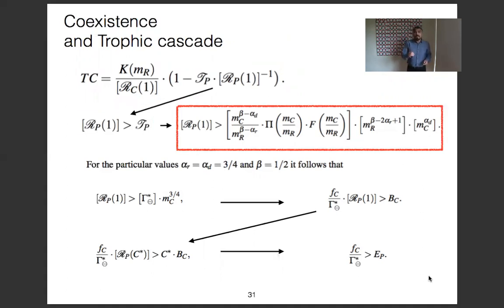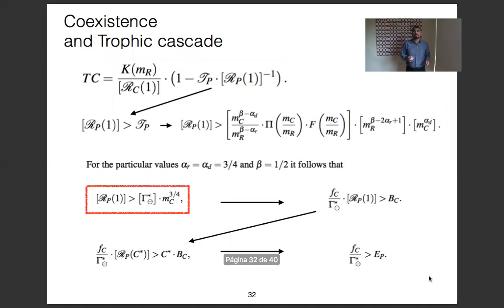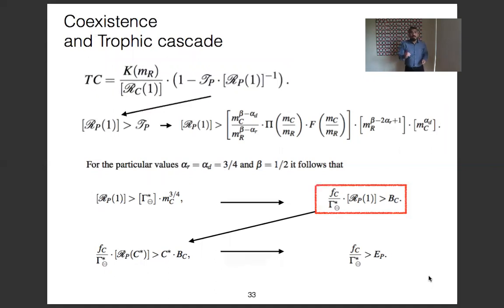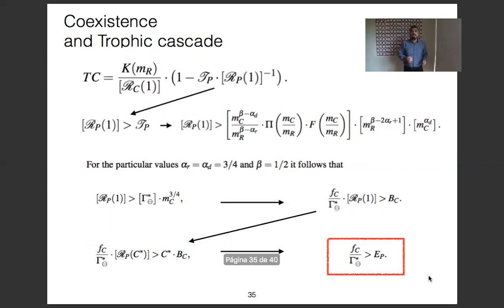Considering the particular case when alpha equals alpha d equals gamma equals three-fourths and beta equals one-half, and some algebraic operations, we obtain that the metabolic rate of the consumer is limited superiorly, and therefore, the Ep energy requirement of the apex predator is limited superiorly. Therefore, for the model of trophic cascade density to make ecological sense, Ep is required to be limited.